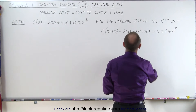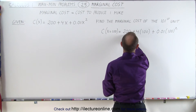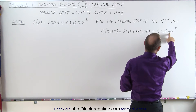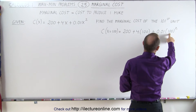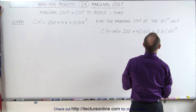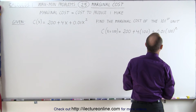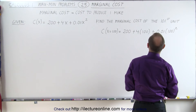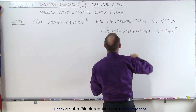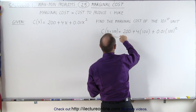So this is 200 plus 400 plus 100, which gives us 0.01 times 10,000, and that equals 100. So altogether that would be equal to $700.